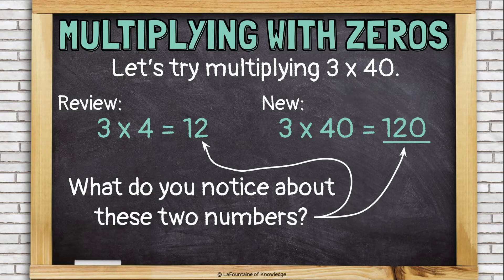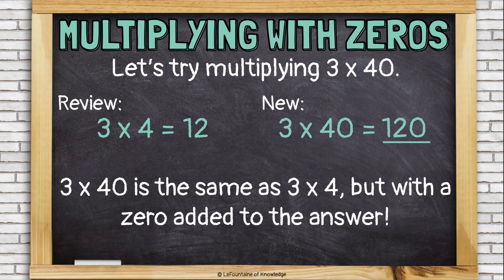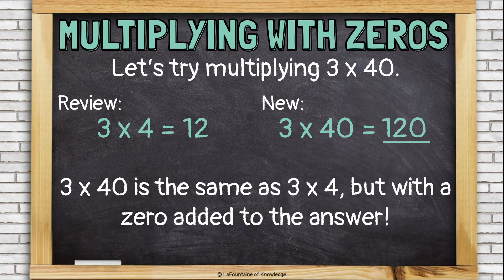What do you notice about these two numbers, 12 and 120? 3 times 40 is the same as 3 times 4, just with a zero added to the end of the answer.